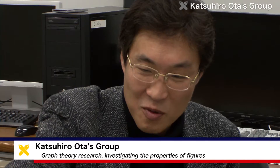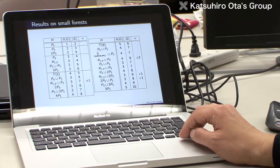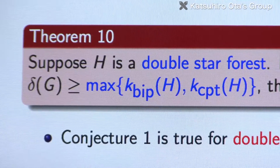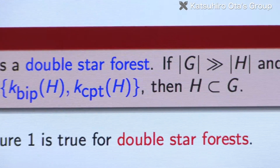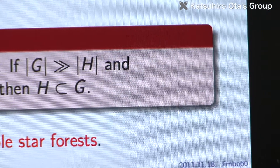At Keio University, the Autor Group in the Department of Mathematics is doing research on combinatorics, which concerns the structures of finite sets. In this field, the Autor Group focuses on graph theory, which investigates the properties of figures consisting of vertices linked by a number of edges.